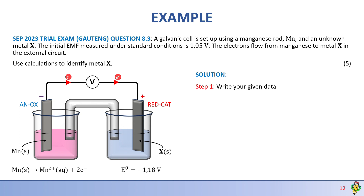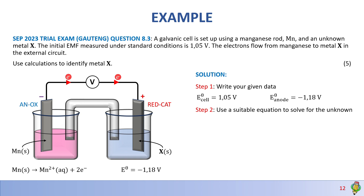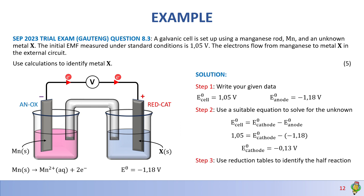Step one: given data — E°cell = 1.05 V and E°anode = −1.18 V. Step two: use E°cell = E°cathode − E°anode and solve for E°cathode. Substituting: 1.05 = E°cathode − (−1.18), giving E°cathode = −0.13 V. Step three: consulting the standard reduction potential tables, the only metal with E° = −0.13 V is lead (Pb). Therefore, metal X is Pb.